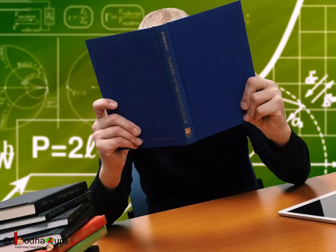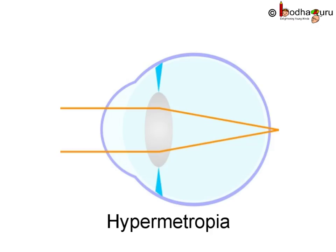You must have observed that some people cannot see things close to them clearly. Such persons keep the reading material much beyond 25 cm from the eye for comfortable reading. This condition is known as farsightedness or hypermetropia.